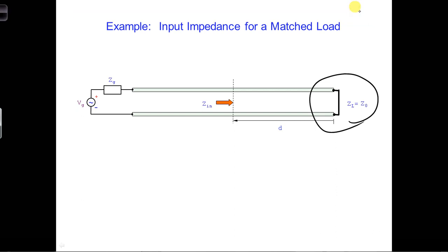There is no reflected wave when the load is matched, and the only wave traveling on the transmission line is a positive traveling wave. So as you move down the transmission line, the input impedance starts at Z-naught.